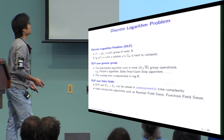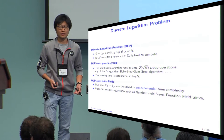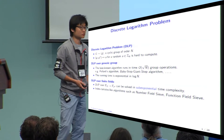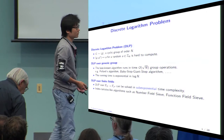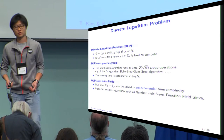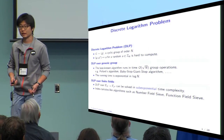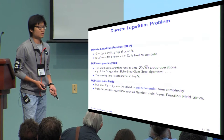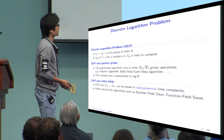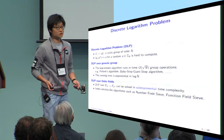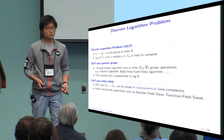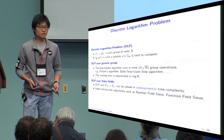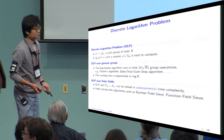It is a problem to solve the discrete log: for a given G and G to the A, where G is a cyclic group. It is very well known that to solve the DLP of a general group takes square root of N steps, which is exponential.